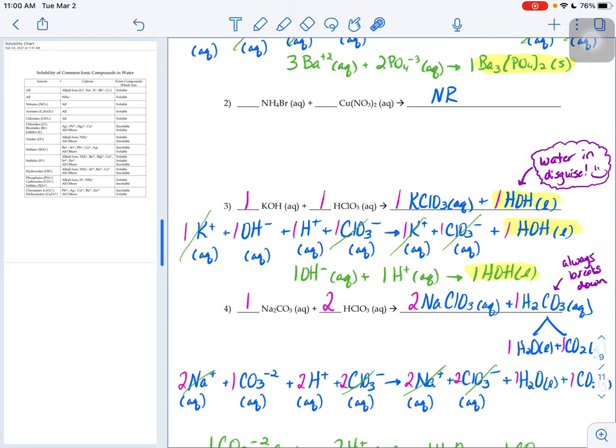We are going to cancel out our potassium and chlorate spectators. So the only ions that we have left over to make our net ionic equation are to have this hydroxide and this hydrogen come together to make liquid water.